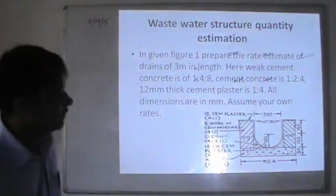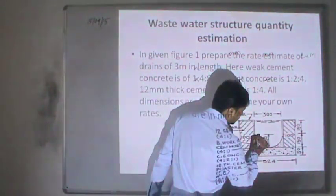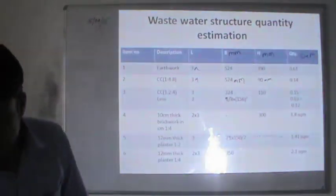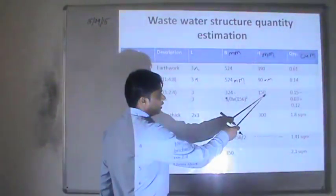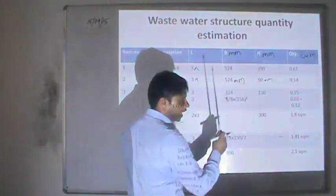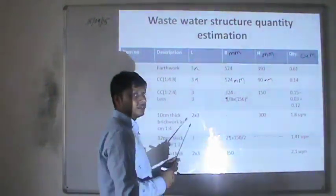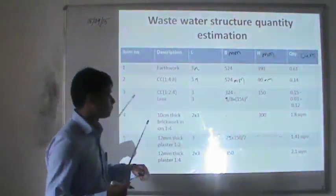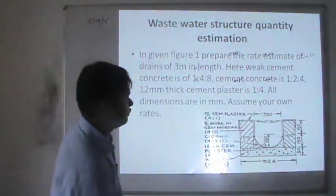For CC 1:2:4, we first calculate the quantity of the rectangular portion — 3 meters × 324 mm breadth × 150 mm height — and then subtract the semicircular portion, which is 3 × (π/4) × D². The net quantity comes out to be 0.12 cubic meters, which is the volume below the semicircular invert.